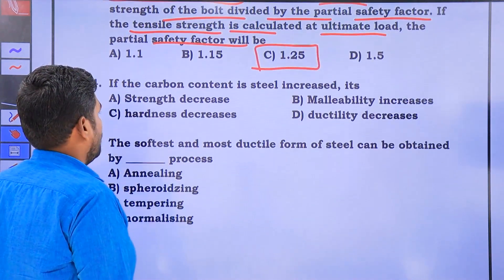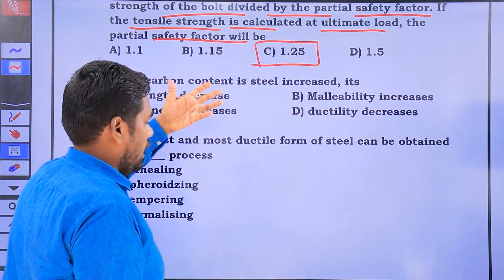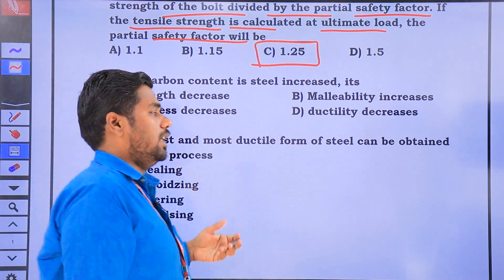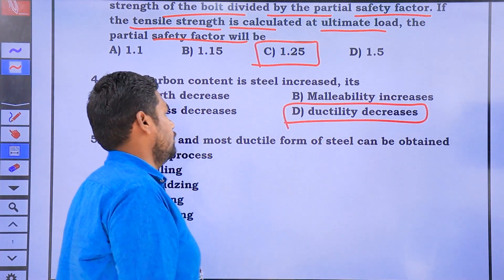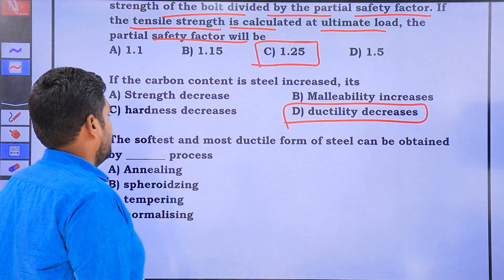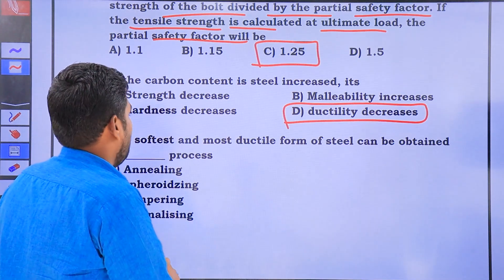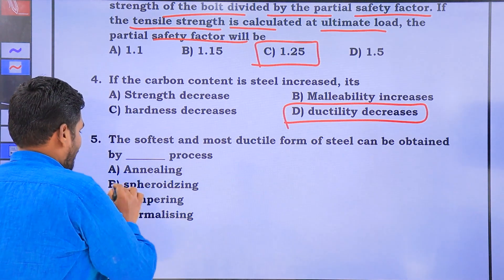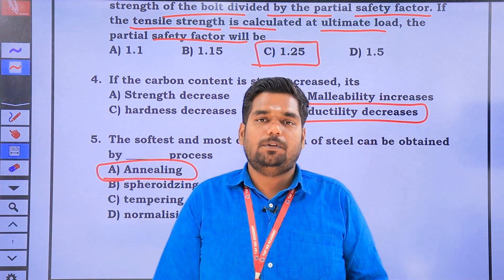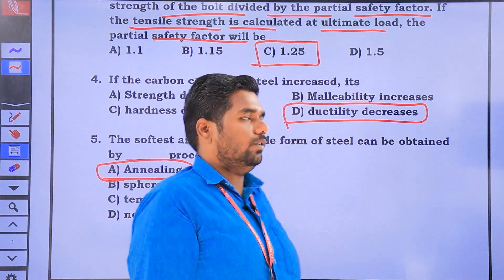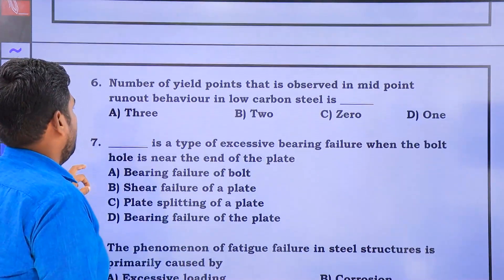If the carbon content is increased, we see changes in ductility. The softest and most ductile form of steel can be obtained by a process of annealing. So, the answer is annealing.